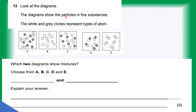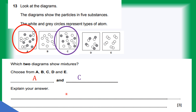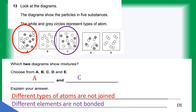Question 13. The diagram shows the particles in five substances. The white and gray circles represent types of atoms. Which two diagrams show a mixture? The ones that contain two different types of atoms — that is A and C. Explain your answer: different types of atoms are not joined; different elements are not bonded.